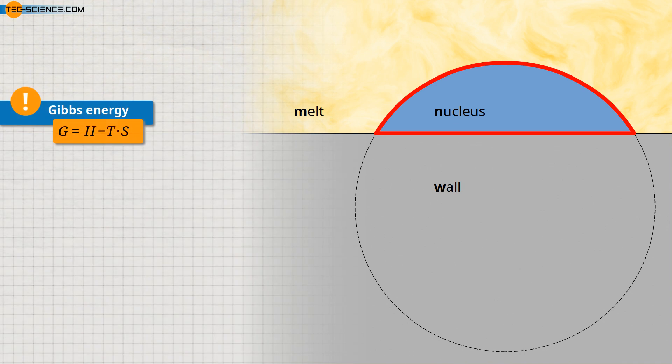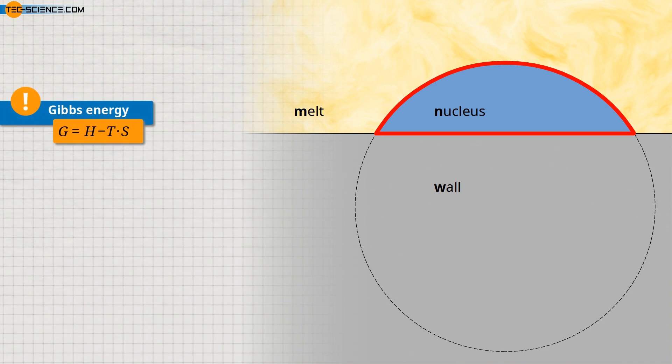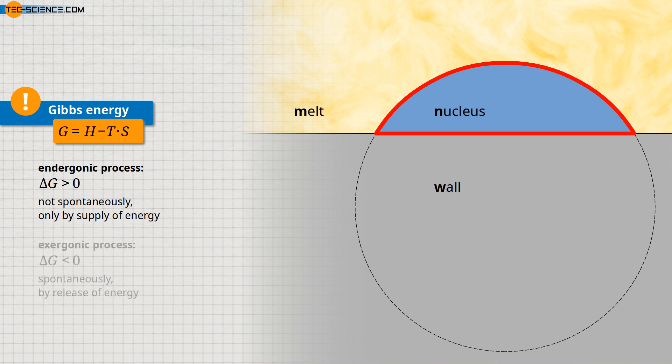The Gibbs energy plays the central role in heterogeneous nucleation. Processes in which the Gibbs energy increases do not take place spontaneously but only when energy is supplied, while processes in which the Gibbs energy decreases take place spontaneously with a release of energy.